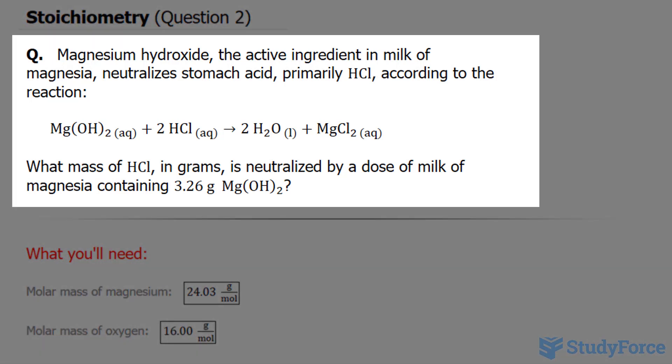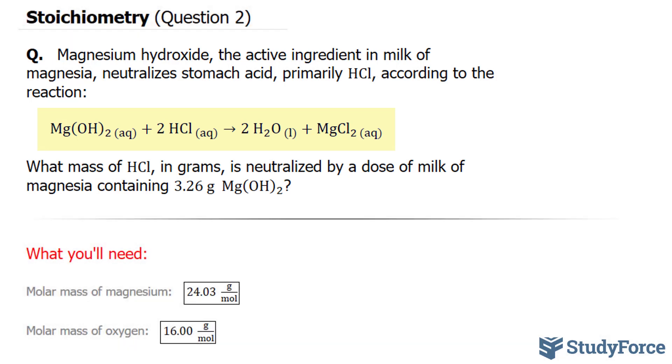Magnesium hydroxide, the active ingredient in milk of magnesia, neutralizes stomach acid, primarily HCl, according to the reaction shown below. Notice that this reaction is balanced. What mass of HCl in grams is neutralized by a dose of milk of magnesia containing 3.26 grams?